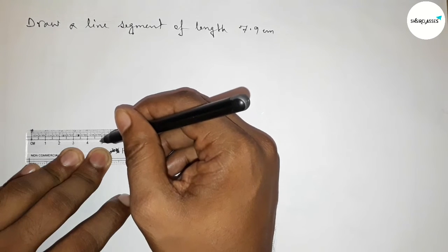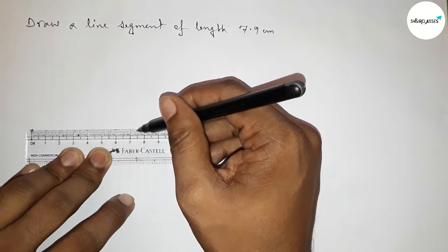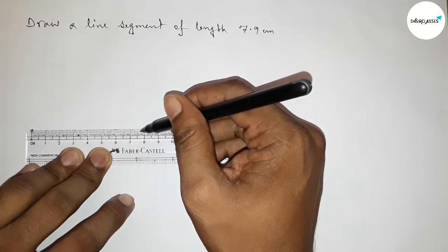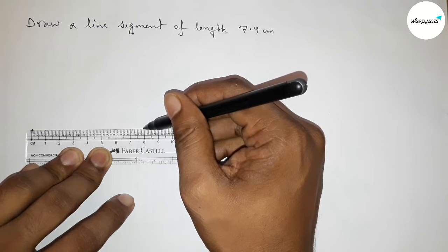Four, five, six, seven, seven point five, seven point six, seven, eight, nine. So this is seven point nine centimeters.